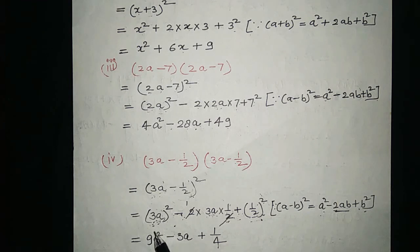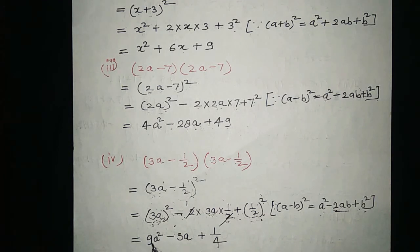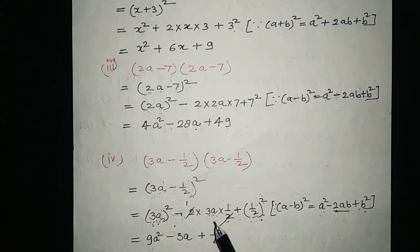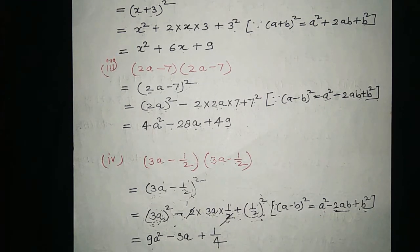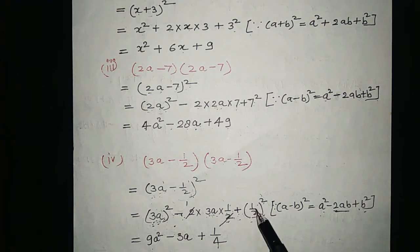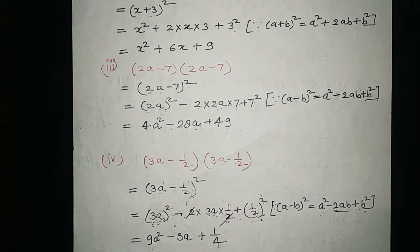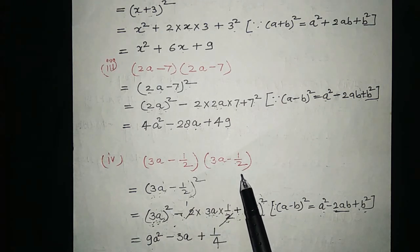Solving further: 3a whole square equals 9a squared. For 2 times 3a times 1/2, the 2 and 1/2 cancel, leaving 3a, so we write minus 3a. And 1/2 whole square equals 1/4, because 1 squared upon 2 squared is 1 upon 4. So the product of these two binomials is 9a squared minus 3a plus 1/4.